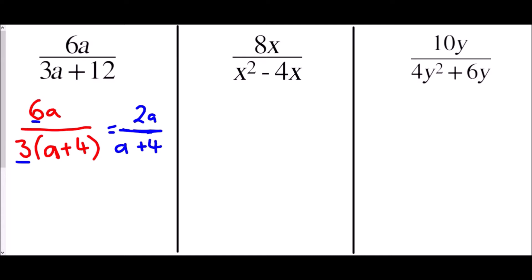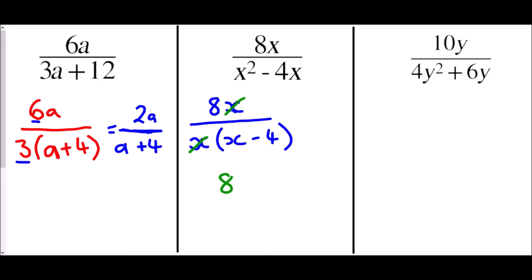In the second one we have 8x over x² minus 4x. Again we're going to factorise the denominator. What goes into x² and into negative 4x? The common factor is x, giving us x(x − 4). We can then cancel the x from the numerator and denominator, leaving us with 8 over (x − 4).